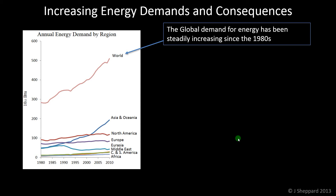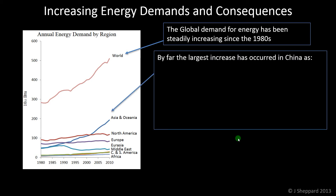Don't worry too much about the units on this axis — it doesn't really matter what the units are, but you can see the years along the bottom. It's been going up steadily since the 1980s and it's likely to keep increasing as well. An interesting fact is that a large part of that is in the Asia and Oceania region.